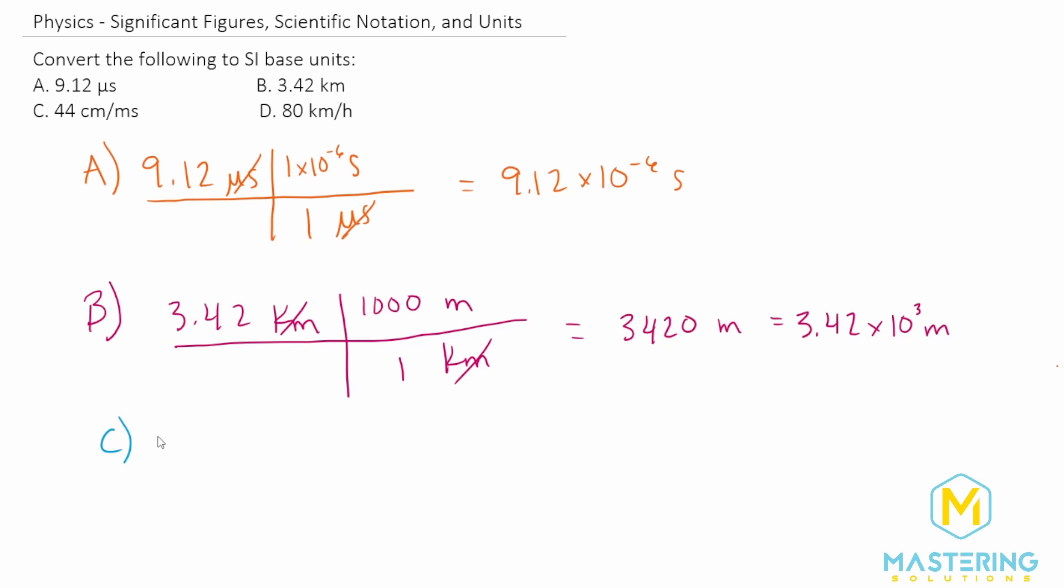Part C, we're converting 44 centimeters per millisecond. So this one's a little bit trickier, but we're going to use the exact same principle. So we know we want centimeters to cancel and standard units for distance, as we just talked about, is meters. So in one meter, there are 100 centimeters. So now the centimeters go away and we're left in meters.